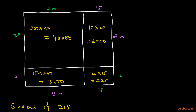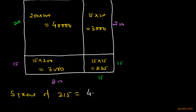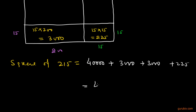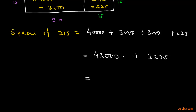Now we shall add the areas of all 4 parts to find the square of 215. So we add 40,000 plus 3,000 plus 3,000 plus 225. This gives us 46,000 plus 225, which equals 46,225. So this is the square of 215. Thank you.